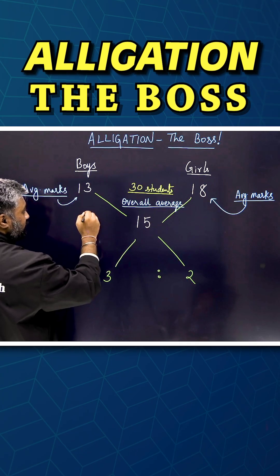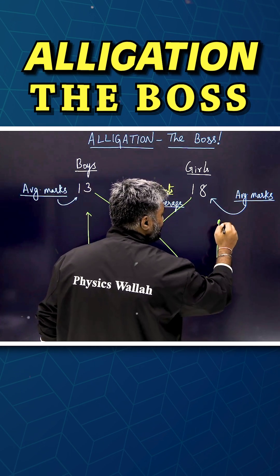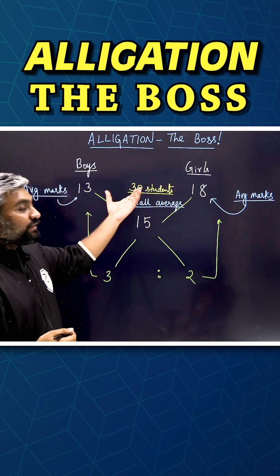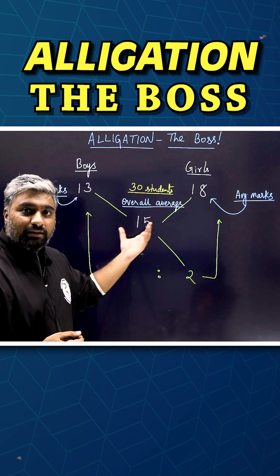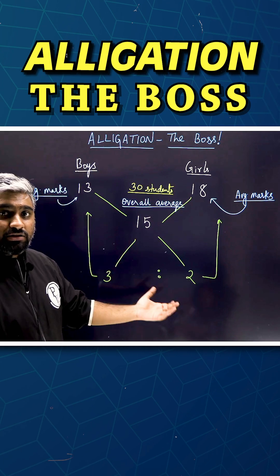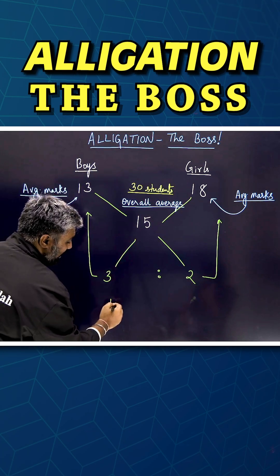So there would be three parts of boys and two parts of girls in the class, that basically means out of 5 parts, we have to split 30 into five parts. So that's six, that's going to be 18 boys.